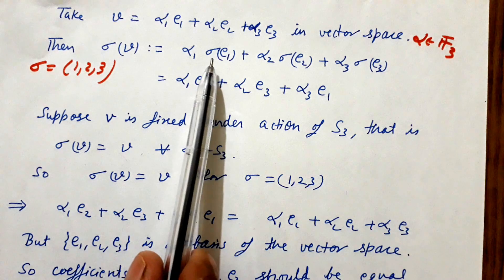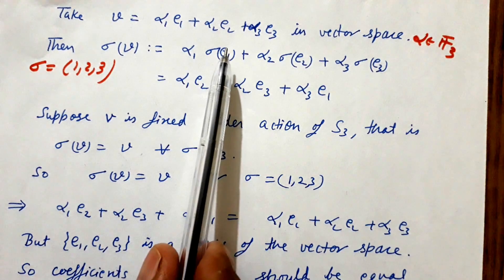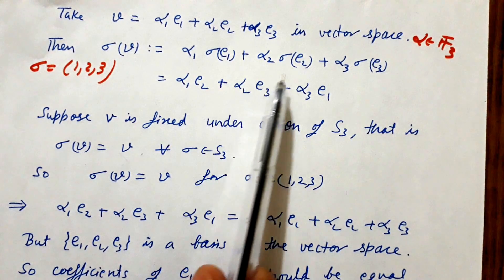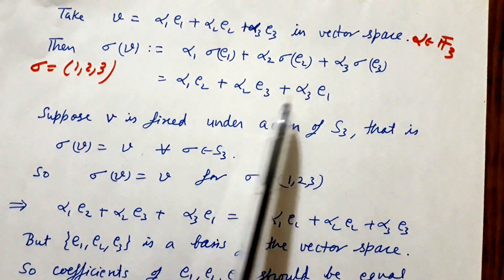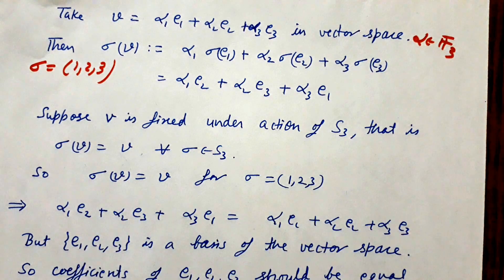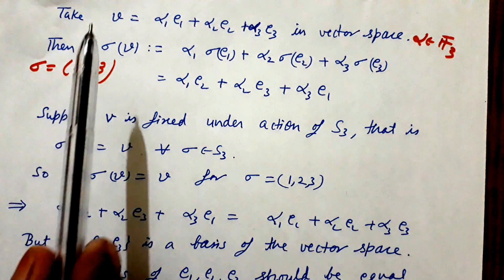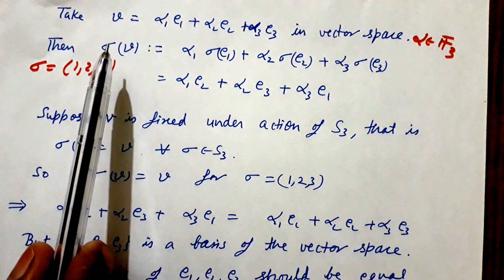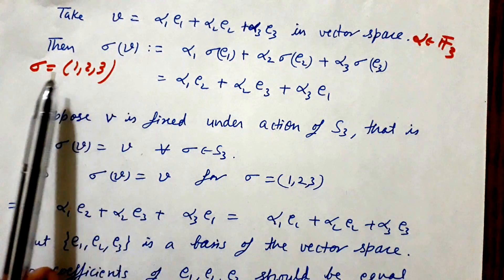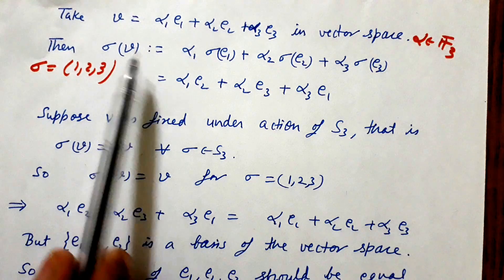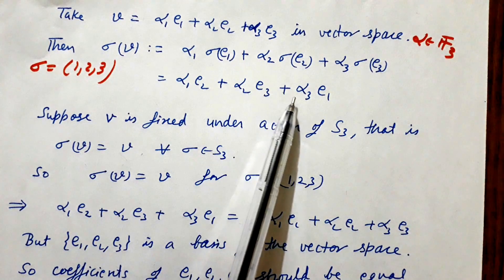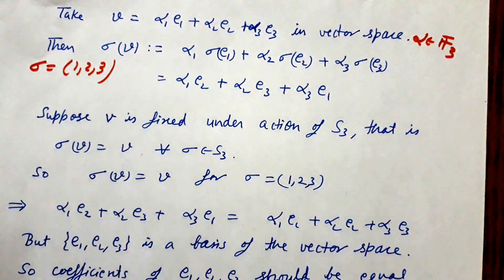For sigma = (1 2 3), we have sigma(E1) = E2, sigma(E2) = E3, and sigma(E3) = E1. So sigma(V) = alpha1*E2 + alpha2*E3 + alpha3*E1.